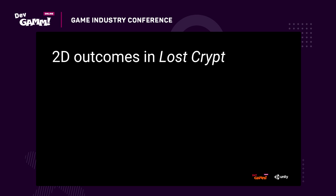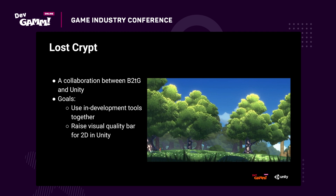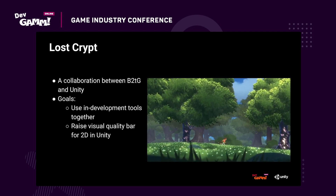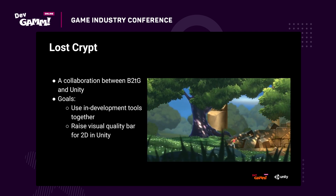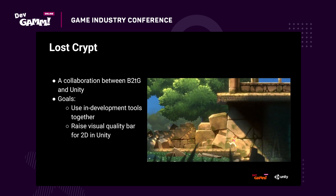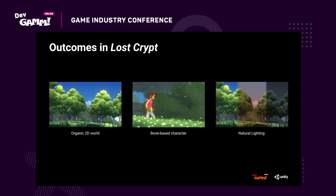Let's switch gears and look at how the 2D features can be used to address some outcomes in 2D games. We will be doing this using assets from the Lost Crypt, which was created by Back to the Game of Montreal alongside the 2D and Evangelism teams in Unity. The goal was to see the tools used together and to raise the quality bar for 2D games. Let's look at how the new 2D features work together to enable three outcomes: an organic 2D world, a bone-based character, and natural lighting in 2D.